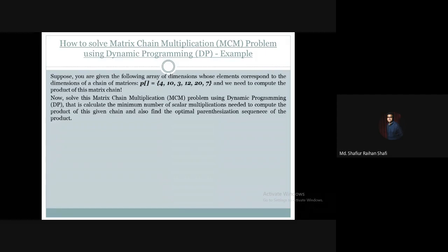This is the optimal parenthesization that gives us the minimum number of scalar multiplications. The matrix chain multiplication problem is to find the minimum number of scalar multiplication operations given a chain of matrices. We can represent the array elements to indicate each dimension value.